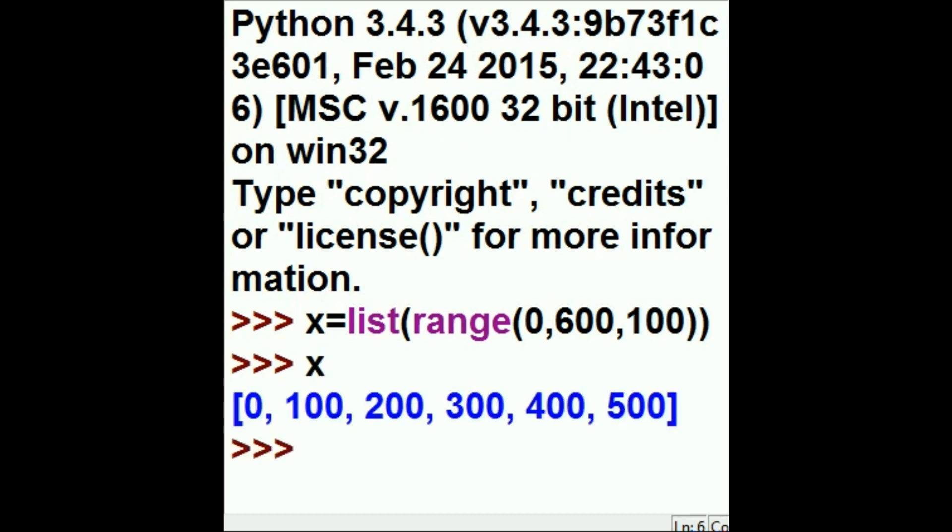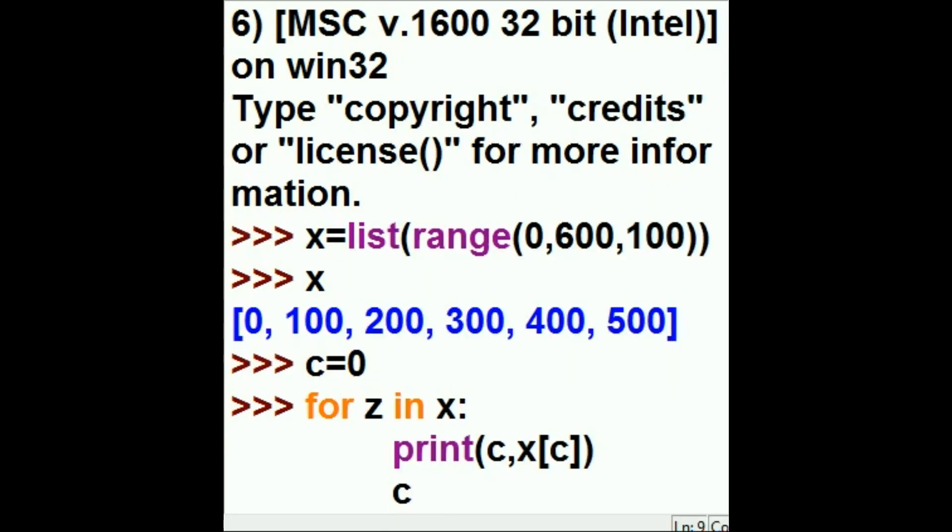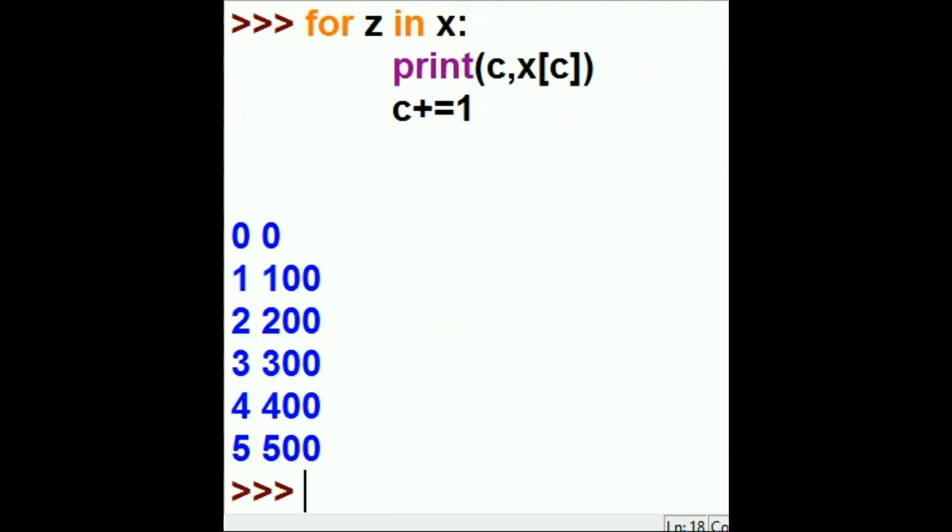The next thing I want to do is create a variable counter, C equals 0. Next thing I'm going to do is create a loop for Z in X, the structure X. Print out the following: C, and then X's Cth index. And then I want to increment C. And there they are, the parade of hits.